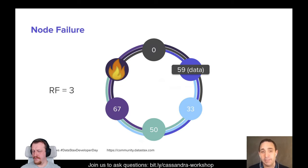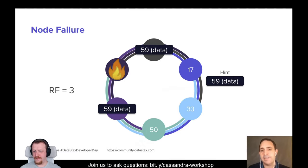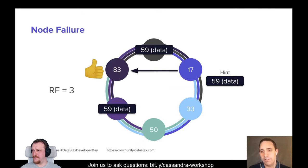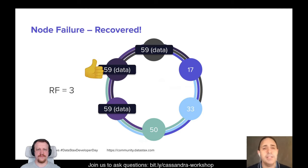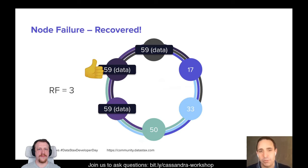Since data is replicated and there's no master, you can lose any node from the data center — it's not a big deal. If one node goes down and I need to insert 59 again, the coordinator sends data to the two remaining replicas and stores the value locally to send when the node comes back online. This mechanism is called hinted handoff, and by default it's set to two hours. You don't want it too long, or you'll have too much data stored locally and it will take a long time to catch up, causing CPU and RAM pressure.